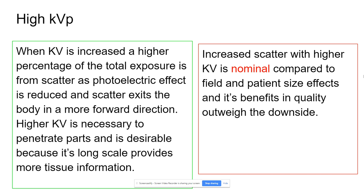When you increase KV, you get less photoelectric effect, and that's why you get more scatter — because more photons come out, giving you a mixture of more going straight but also more in the remnant beam at angles. Scatter is kind of misinformation — not the best data about the attenuation of tissues — so if you can get rid of some of it, it gives you a better image. That scatter gives misleading information, messing up the reconstruction process and showing up as noise. I would still use higher KV because it's on the lower end of scatter-causing things compared to collimation and patient thickness.